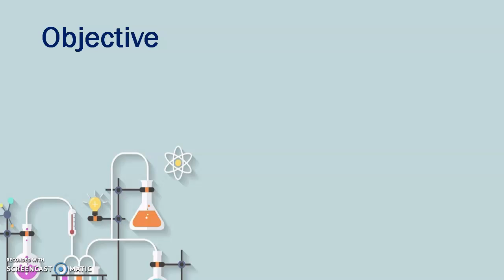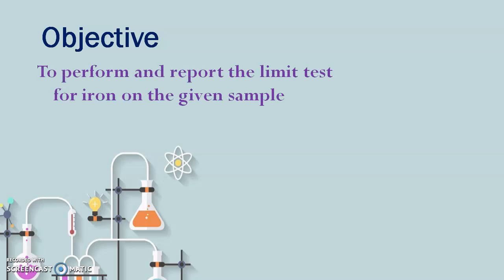The objective of performing the limit test for Iron is to perform and report the limit test for Iron on the given sample. Whenever a sample is given to check the limit test for a particular substance, we have to perform the limit test, and based on that we will understand the presence of impurities in the pharmaceutical substance.